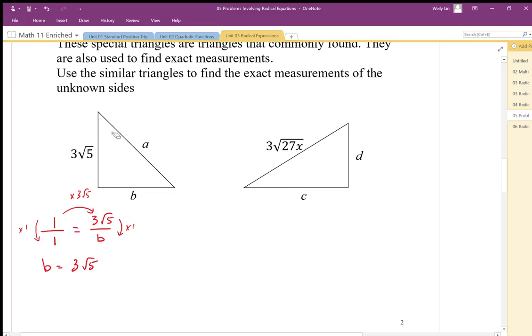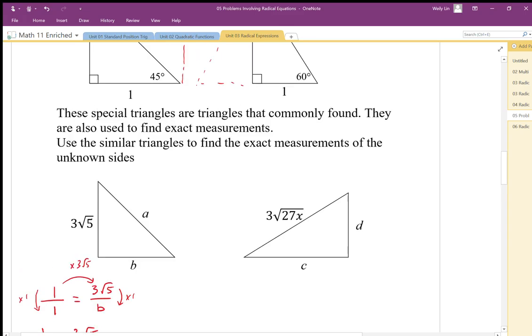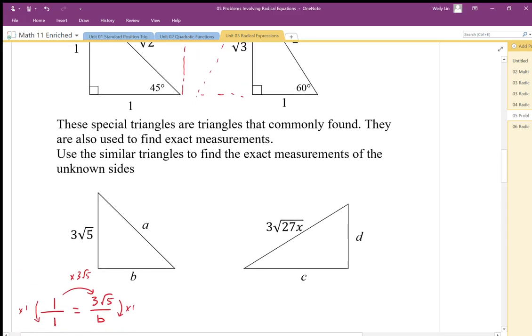Here we can solve for A using Pythagoras. We can use the scale factor ratio of times by 3 root 5, or we can use a trig ratio. I want to use a trig ratio again to do this.